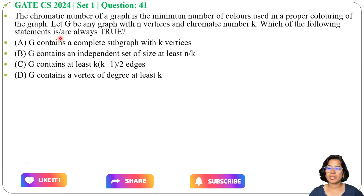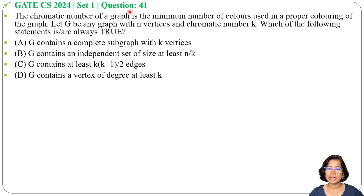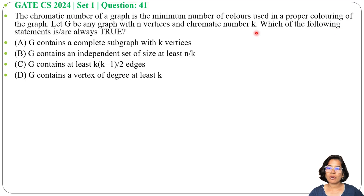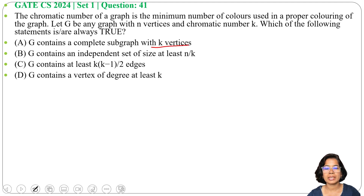Let's look at a previous question on graph theory. This question was asked in GATE 2024, Set 1, Question number 41. The chromatic number of a graph is the minimum number of colors used in proper coloring of the graph. Let G be any graph with N vertices and chromatic number K. Which of the following statements are always true? Four options are given. Option A: G contains a complete subgraph with K vertices.